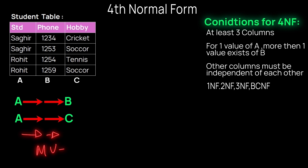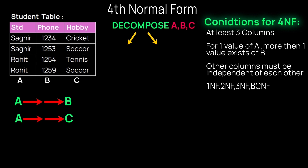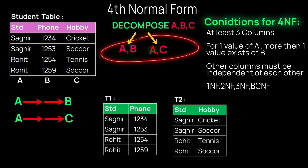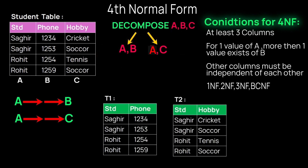So the table satisfies all previous normalization conditions. Since B is a multi-value of A and C is a multi-value of A — shown by double arrows — we decompose the table. The rule for decomposition is to break the table into two: keep the non-multivalued attribute in the first column, and fill the other column with one multivalued attribute each — phone number in one table and hobby in the other. By splitting the table into two, we have achieved fourth normal form.